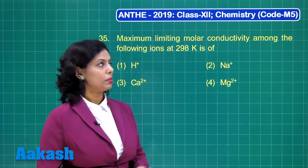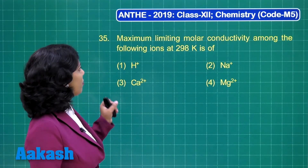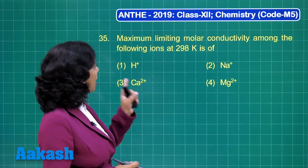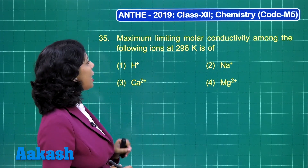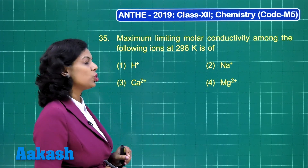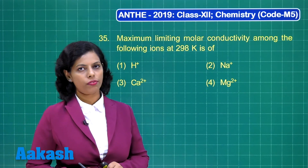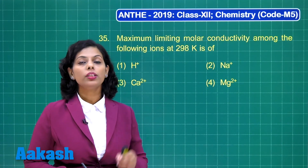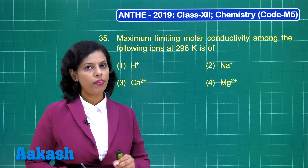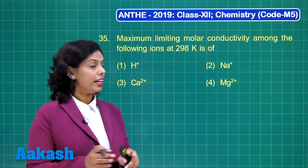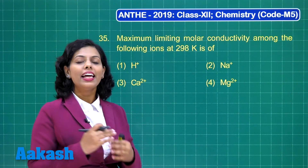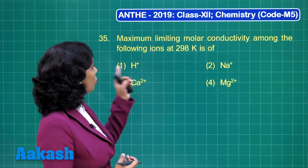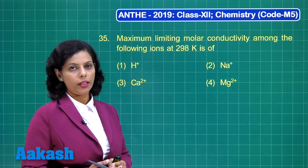Now student, here is question number 35. Maximum limiting molar conductivity among the following ions at 298 Kelvin is — in this question, you should just remember the fact that H⁺ ion has exceptionally high value of the limiting molar conductivity.